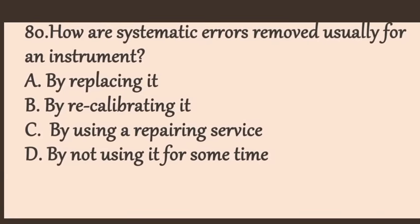How are systematic errors removed from an instrument? A) by replacing it, B) by recalibrating it, C) by using repair service, D) by not using it. Systematic errors are eliminated by calibrating different measuring instruments. The answer is B, by recalibrating.